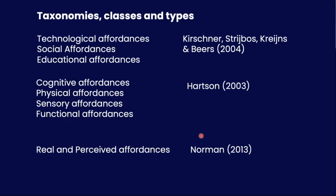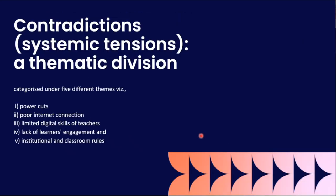In my case, I categorized contradictions or systemic tensions under five different themes: power cuts, poor internet connection, limited digital skills of teachers, lack of learners' engagement, and institutional and classroom rules.